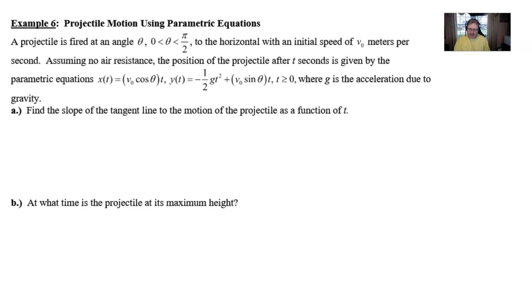So for our part A, find the slope of the tangent line to the motion of the projectile as a function of t. Well, you don't want to throw out the baby with the bath water, so to speak. In other words, just because this problem is unique in that it's dealing with motion, we still see this idea of slope of tangent line presented to us and we still want to use the concept that we learned before.